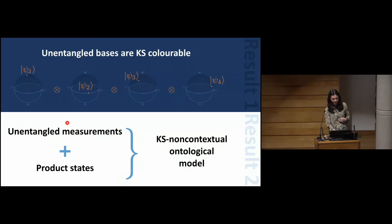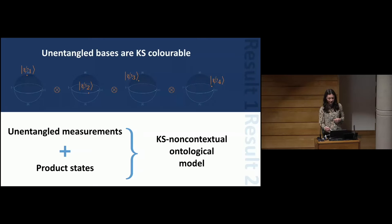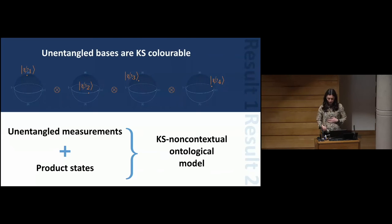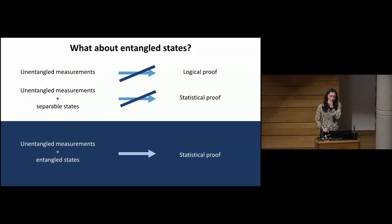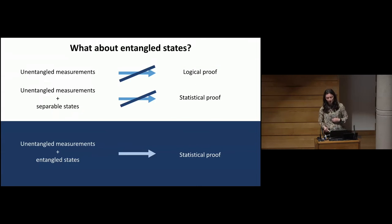Our second result is that you can use these colourings to build a KS non-contextual ontological model for the fragment of quantum theory consisting of unentangled measurements and product states — an extension of the original Kochen-Specker model for a single qubit to the multi-qubit case. This also extends to separable states, where the model becomes preparation contextual, but it's still valid for Kochen-Specker non-contextuality. So with unentangled measurements we can't have a logical proof, and with unentangled measurements and separable states we can't have a statistical proof.